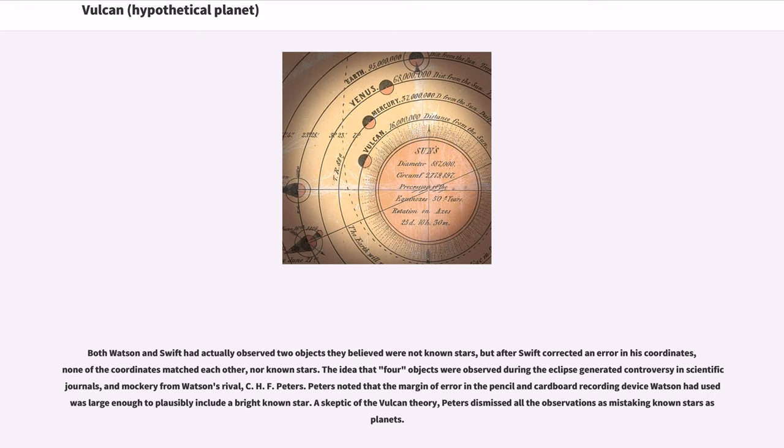Both Watson and Swift had actually observed two objects they believed were not known stars, but after Swift corrected an error in his coordinates, none of the coordinates matched each other, nor known stars.